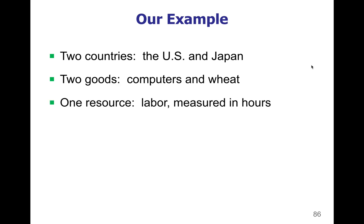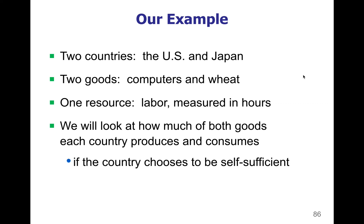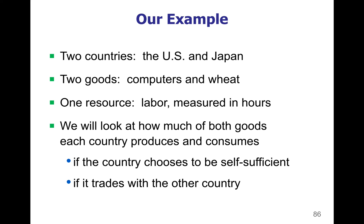Just like we did before, we're going to put wheat on the vertical axis and computers on the horizontal, and measure both in labor hours used. When trying to see whether the United States and Japan should be trade partners, we first have to look at whether the country decided to be self-sufficient — meaning they're not going to trade with anybody — and how many wheat and computers would they make on their own. Then we have to see if trading would give us more than what we could make ourselves. A trade by definition only happens if both partners are going to get more goods and services than they could make on their own. Otherwise, they'll just make it themselves.